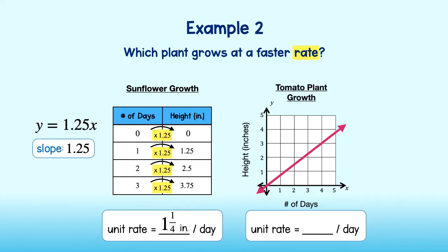Alright, I want to know how many inches the tomato plant grows in one day. To do that, I will calculate the slope. Slope, or m, is equal to y2 minus y1 over x2 minus x1. I will choose the point 0,0, which will represent x1 and y1, and 4,3, which will represent x2 and y2.